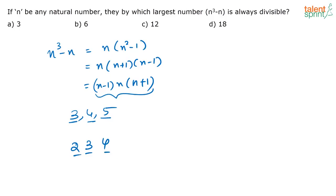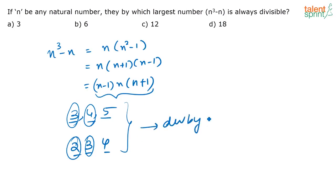Take any combination — I'll use 2, 3, 4 and 3, 4, 5 to explain easily. Any set of numbers I take, I can always see there will be one number divisible by 2 and one number divisible by 3. So definitely, any set of three consecutive numbers will be divisible by 6. Because it is divisible by both 3 and 2, n³ - n will always be exactly divisible by 6.